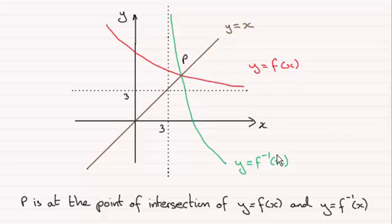Now because an inverse function is a mirror image of the original function in the line y equals x, then this point here must be an invariant point. It must be the same for both these two curves. So that's why P is the point of intersection of y equals f of x and the inverse function of f of x.